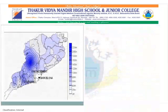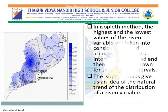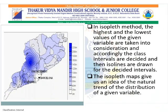In the isopleth method, the highest and the lowest values of the given variable are taken into consideration, and accordingly the class intervals are decided. Then isolines are drawn for the decided intervals. The isopleth maps give us an idea of the natural trend of the distribution of a given variable.